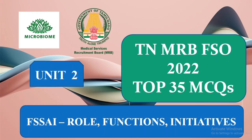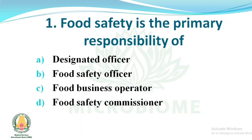Hi everyone, today we are going to discuss the top 35 MCQs of Unit 2. Unit 2 covers Food Safety and Standards Authority of India, its role, functions, and initiatives. The remaining 8 units will be discussed in further classes. Please subscribe to our channel. The model question paper link and Unit 1 link have been given in the description. Let's move on to questions.